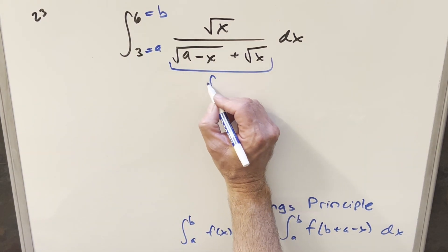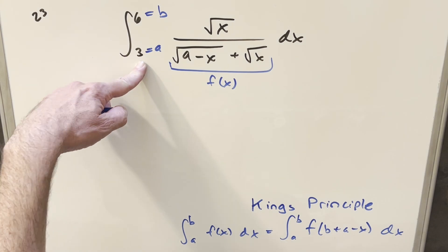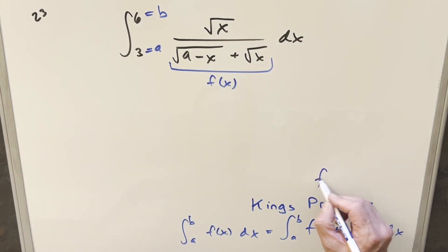And all this stuff right here, this is going to be our f of x. And what we're going to want to transform this with is f of b plus a minus x. Well, b plus a is just going to be adding the bounds. So what we're going to be using is f of six plus three or nine minus x.